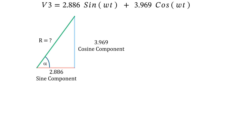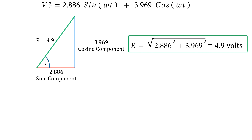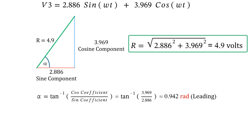Think of v3 like the other two voltages — it has a sine component, a cosine component, and a resultant amplitude which is the hypotenuse, found using Pythagoras. Square the sine component, square the cosine component, add them and square root — the amplitude r of v3 is 4.9 volts. Then use tan to the minus one of the cosine component divided by the sine component to find alpha, the resultant phase shift, which is 0.942 radians — positive, so it's leading the y-axis.